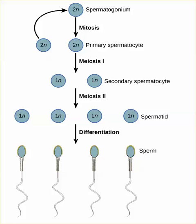We start with a 2N or diploid cell, and one question you may have is: why don't males run out of sperm? The answer is that before a potential sperm cell, called a germ cell, undergoes meiosis, it first undergoes mitosis to produce a replacement. So males are constantly replacing cells that undergo the process of meiosis.